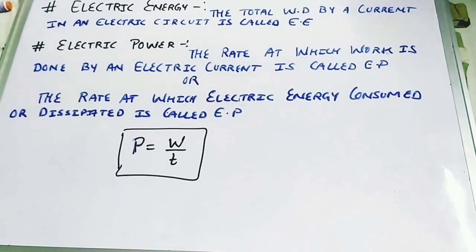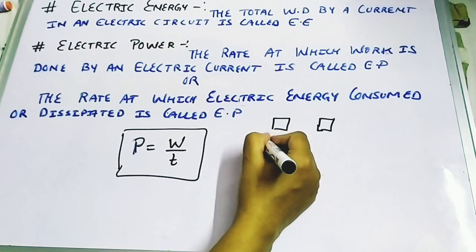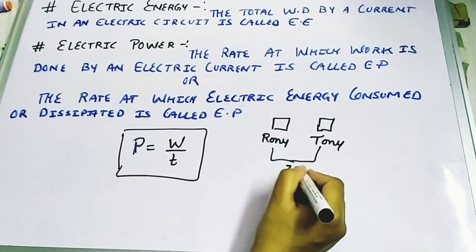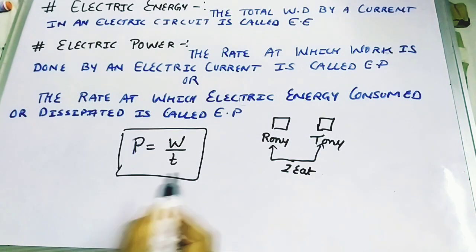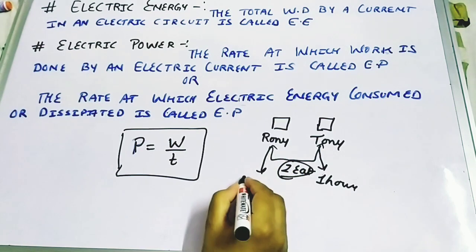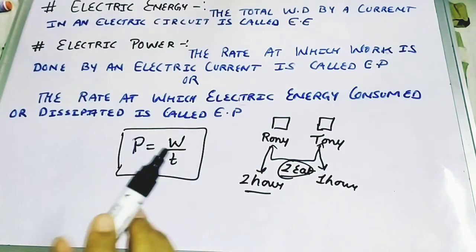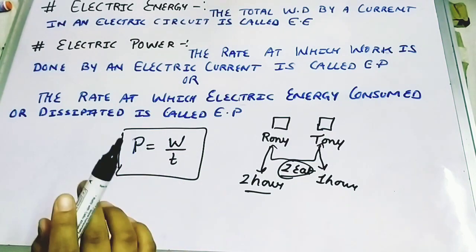To understand the difference, consider this analogy: suppose two persons, Ronnie and Tony, both eat two chapatis and gain the same amount of energy. Tony does a certain amount of work in one hour, while Ronnie does the same work in two hours. The rate of doing work — how fast or how slow — tells you the power, while the total work done is the energy.